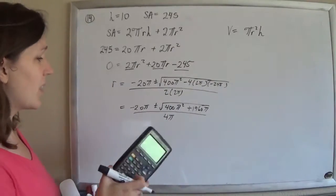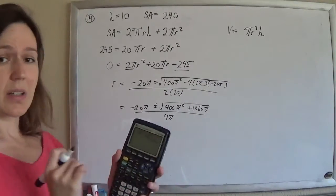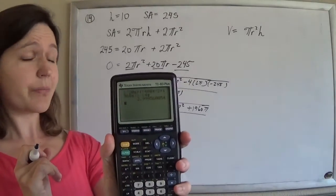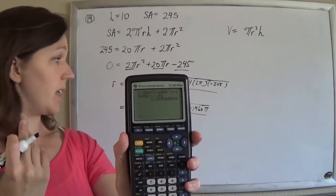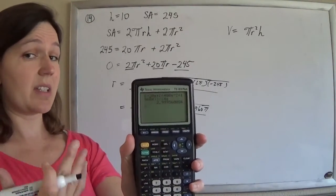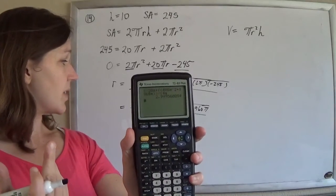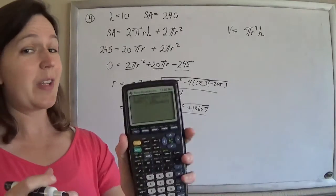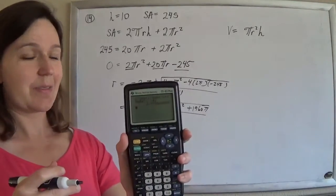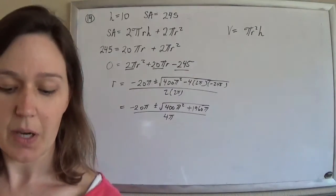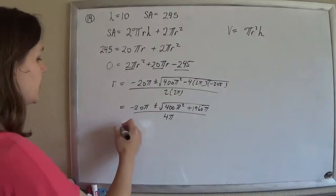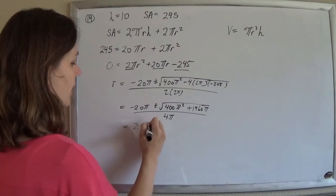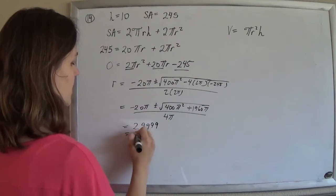But we do have a calculator, so if you just plug this all in on the calculator, you just crunch it in, making sure you have parentheses around the entire top and around the entire inside of that square root. I don't know if you can see that, but that's what it looks like. And just pop that all in, and you do indeed get that the radius is about 2.9999, which is about 3.